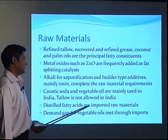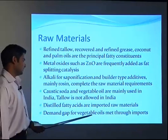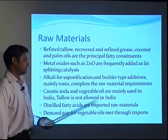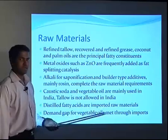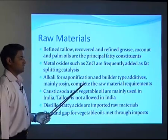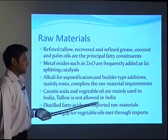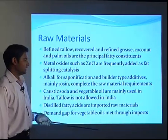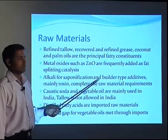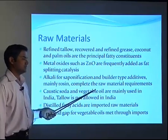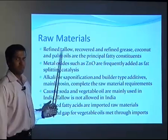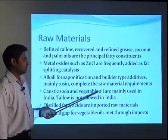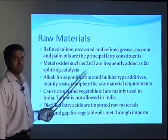Raw materials include refined tallow, refined grease, coconut and palm oils as the principal fatty constituents. Metal oxides such as zinc oxide are frequently added as fat-splitting catalysts. In India, caustic soda and vegetable oil are mainly used; tallow is not allowed in India as it is of animal origin, so Indian soaps are vegetable oil-based. Distilled fatty acids are imported raw materials, and the demand gap for vegetable oil is met through imports since most vegetable oil in India is consumed as food, leaving very little for soap production. About 70% of the vegetable oils required for soap production are imported, and non-traditional oils are increasingly being used to meet demand.